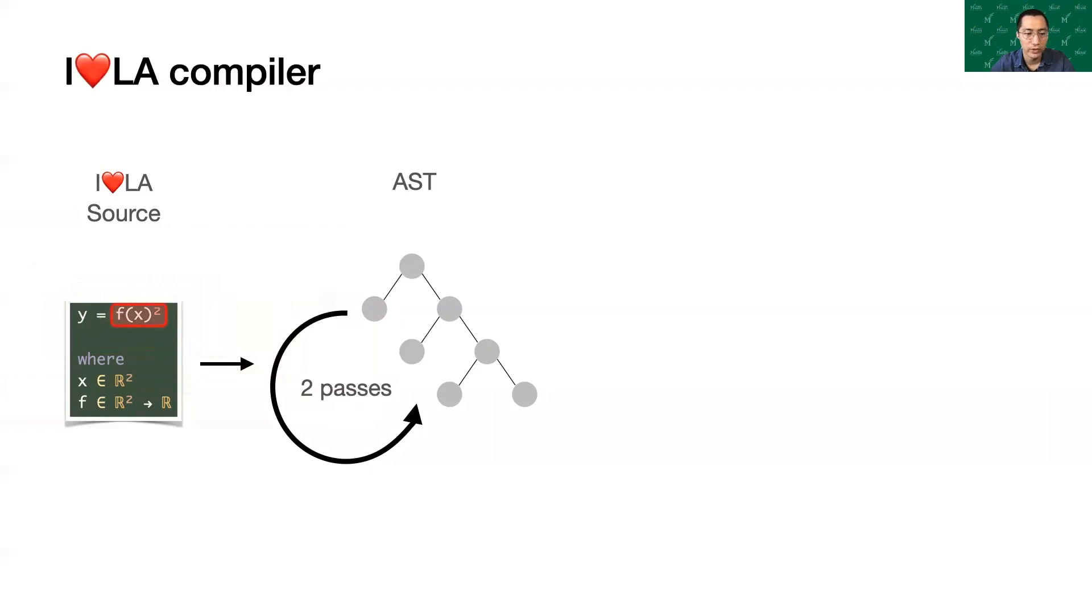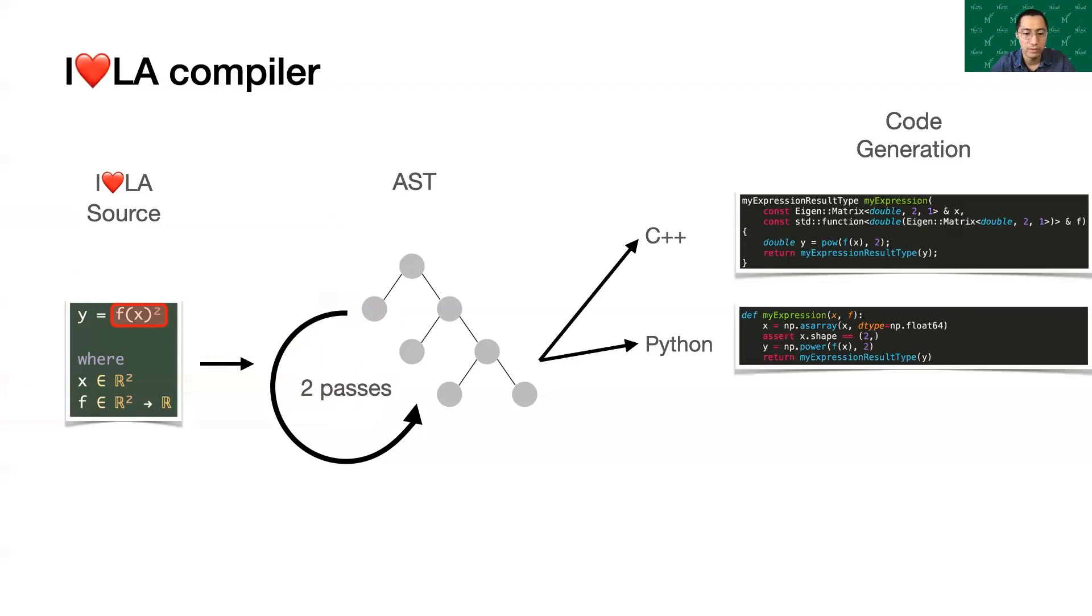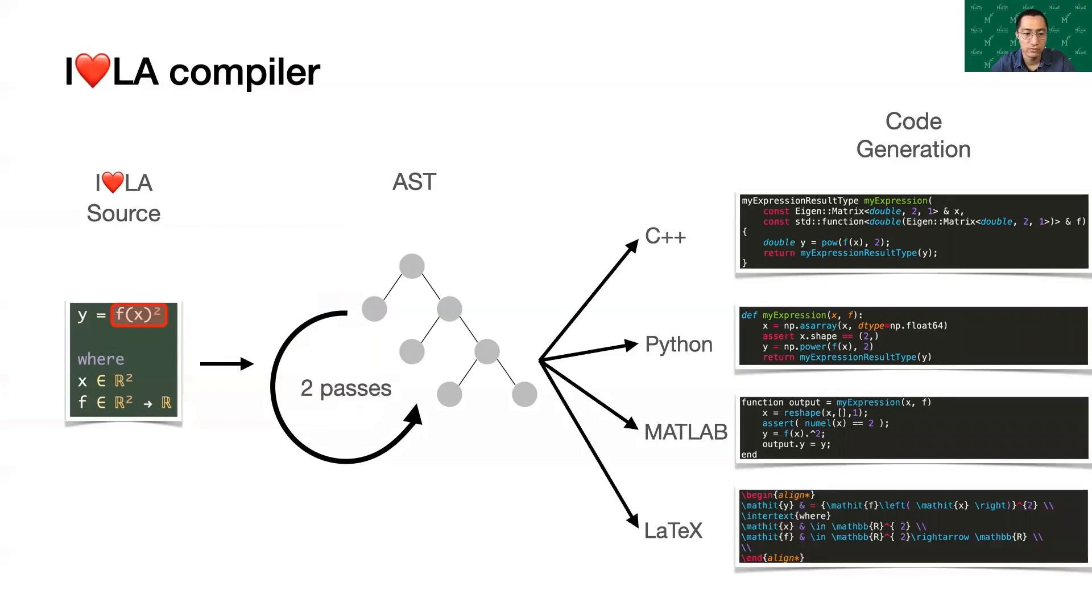It generates a typed grammar, so that the second pass can compile the correct AST. For this example, it defines fx as a function call rather than multiplication. We have backend code generators for C++ with Eigen, Python with NumPy, SciPy, MATLAB, and LaTeX. The first three were chosen to highlight the ability to generate code for both statically typed and dynamically typed languages, with zero and one-based indexing.